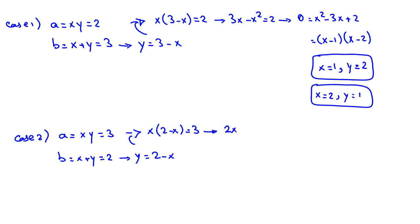And we can say 2x minus x squared equal to 3. We take all things to right hand side, x squared minus 2x plus 3 equal to 0.